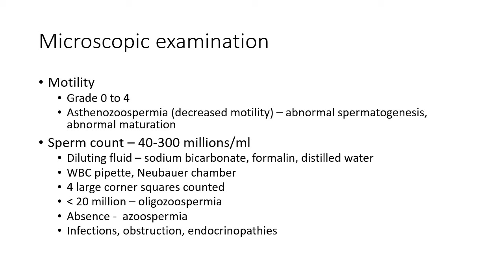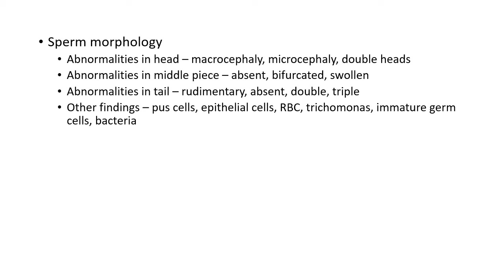The normal sperm count is 40 to 300 million per milliliter. The sperm count is done using a WBC pipette and Neubauer chamber with semen diluting fluid containing sodium bicarbonate, formalin, and distilled water. Semen is drawn to the 0.5 mark in the WBC pipette, diluting fluid to mark 11; the Neubauer chamber is charged and sperms are allowed to settle for 5 minutes; sperms in the four large corner squares are counted. Sperm count less than 20 million per milliliter is called oligospermia; absence of sperms is called azoospermia. Causes of low sperm count include infections like mumps orchitis or prostatitis, obstruction of the efferent ducts, and endocrinopathies like hypopituitarism and hypogonadism.